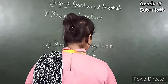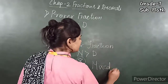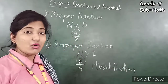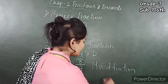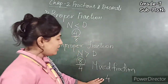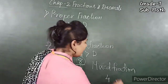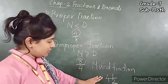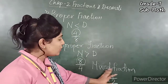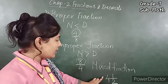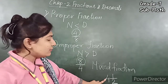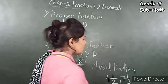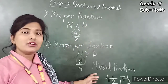Now, what is Mixed Fraction? Here, one number is a whole number. For example, 4 is the whole number, and along with it there is one fractional part. So 4 and 1 by 2 is called Mixed Fraction. We pronounce this as 4, 1 by 2. Another example is 7, 1 by 3. These all are considered as mixed fractions.